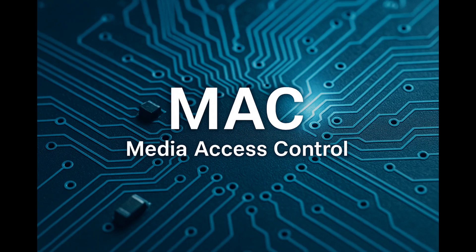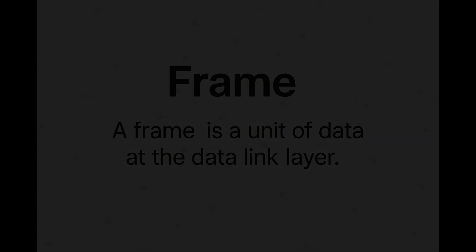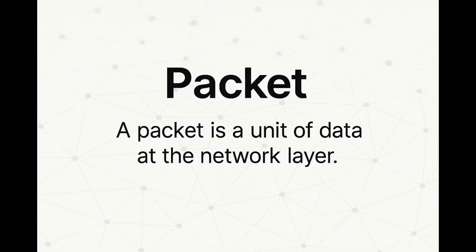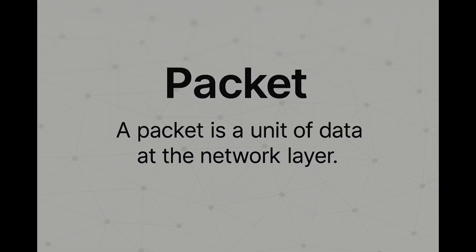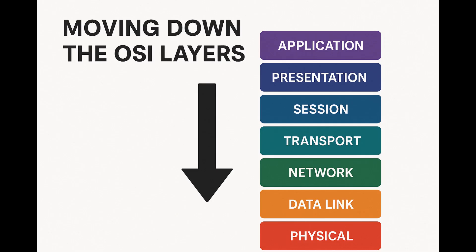If we want to stick to the proper terminology, on layer two — the data link layer — the data that we send is called a frame. On layer three — the network layer, the one with IP addresses — it's called a packet. A frame is technically not a packet. A frame is what switches work with. When data is being sent, it moves down the OSI layers.